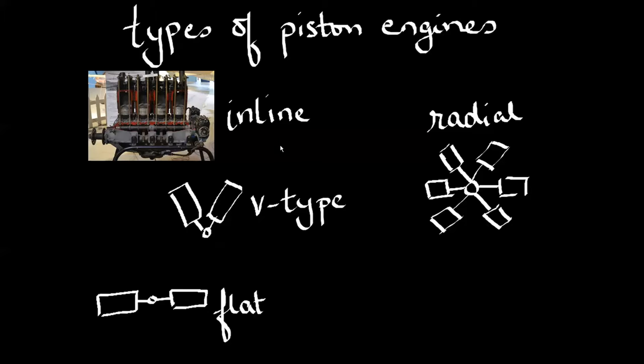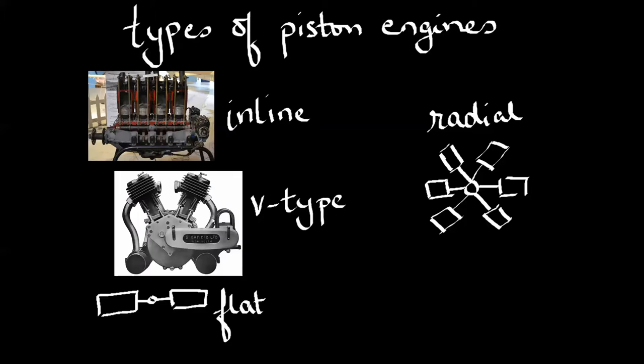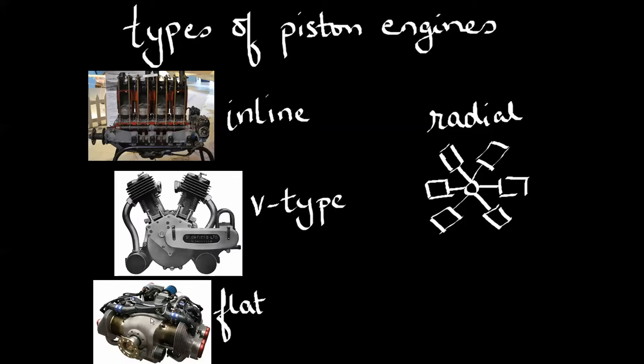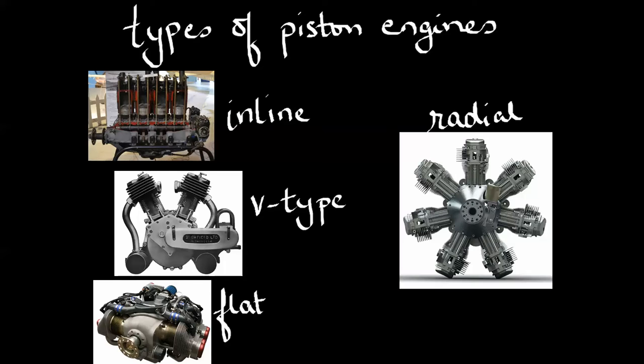In real life, they look like this. Inline, as you can see, four cylinders in a straight line. V-type, in a V. Flat, horizontally opposed, although I do believe this is an H engine, not just a flat engine. And the radial. Of course, I drew six cylinders—there are seven.